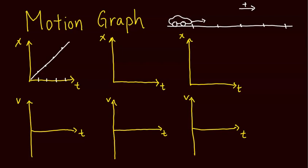Now thinking about the velocity graph: because the velocity is not changing, it's going to be constant. Velocity could be positive, zero, or negative. In this case the car is moving in the positive direction, so it's going to have a positive velocity — a flat horizontal line above zero.